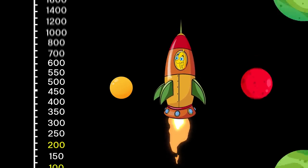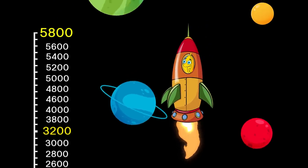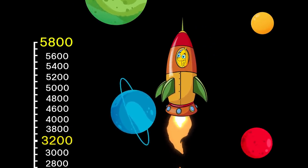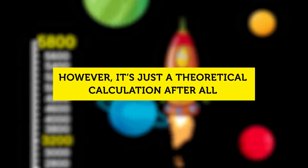In fact, growing at a modest rate of 1% per year, Kardashev estimated that it would take only 3,200 years to reach Type 2 status and 5,800 years to reach Type 3 status. However, it's just a theoretical calculation after all.